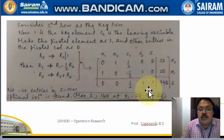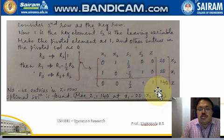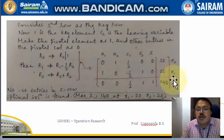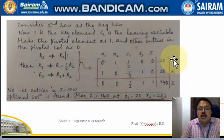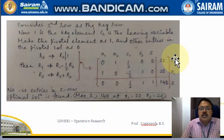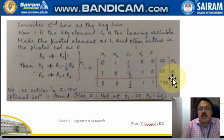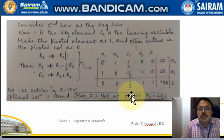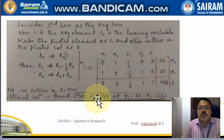The optimal solution is found. The maximum value of z is 140. The slack variables s1 and s2 have left, and the basic variables x1 and x2 have entered the solution. x1 = 20 and x2 = 20 are the values at which the maximum value of z is obtained. Thank you.